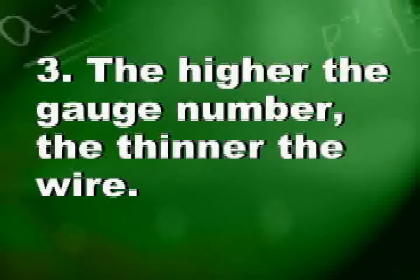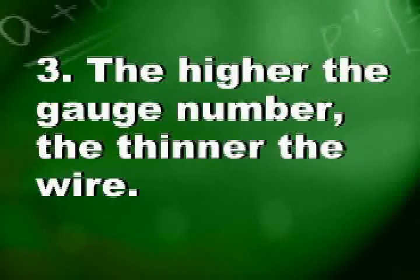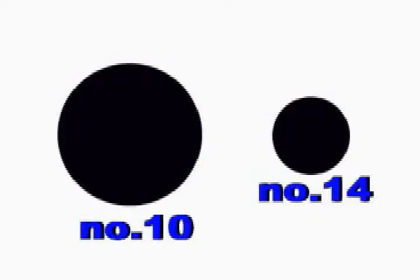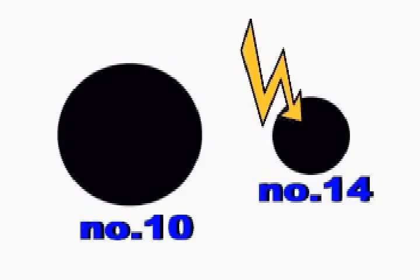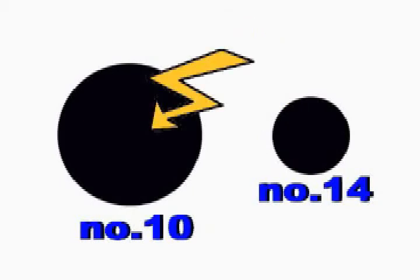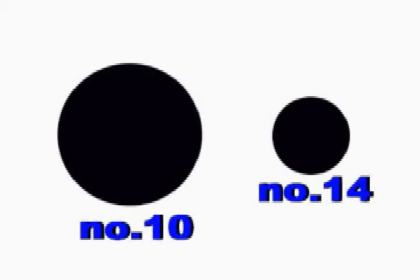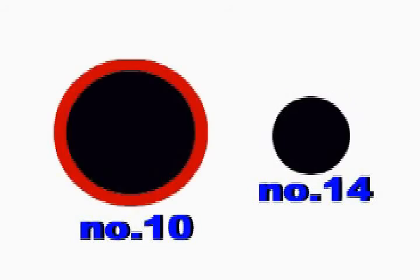Number 3: The higher the gauge number, the thinner the wire becomes. Number 14 wire is thinner than number 10 wire, wherein number 14 has the higher gauge number than number 10.